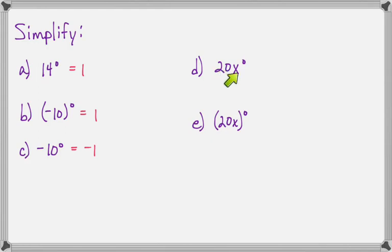Here, 20x to the 0, the base is x, and the exponent is 0. Anything to the 0 power is 1, but the 20 will stay where it is. So we get 20 times 1, which is 20.